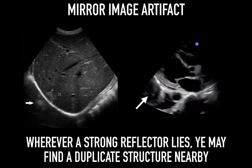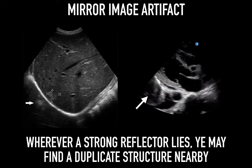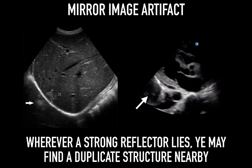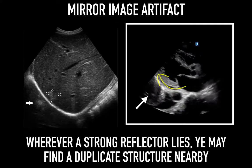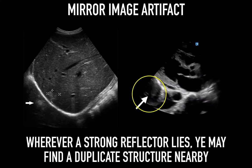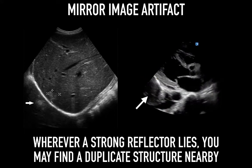That concept explains the image on the left — a mass, or at least a perceived mass, above the diaphragm. It's not really there; it's a duplicate from the underside of the diaphragm. If you change the imaging plane or position of the probe, this will likely disappear. Real images are visible in multiple planes. The image on the right shows a parasternal long axis view where the pericardium is a strong reflector. Often with the right position, you will see a cardiac structure and its duplicate in the far field. Wherever you find a strong reflector, you may find a duplicate structure somewhere nearby.